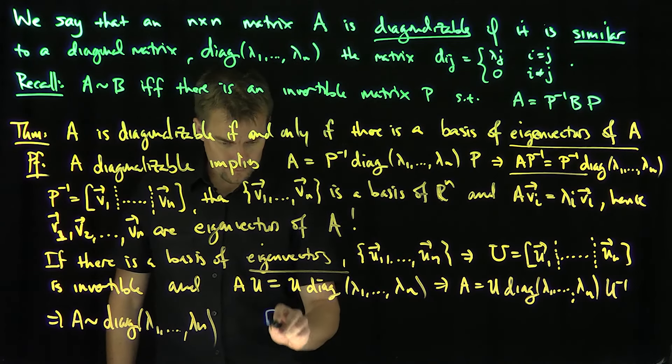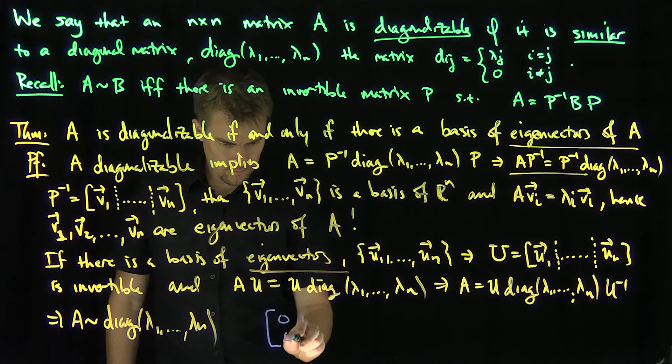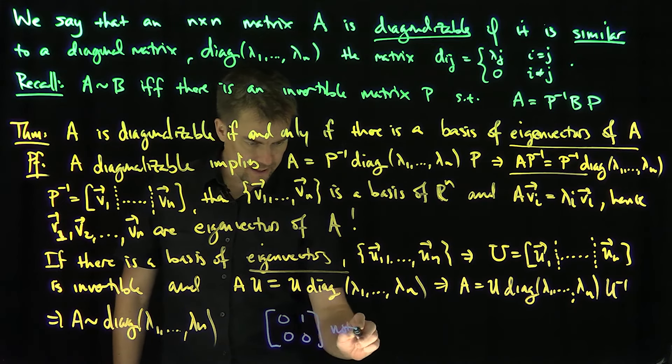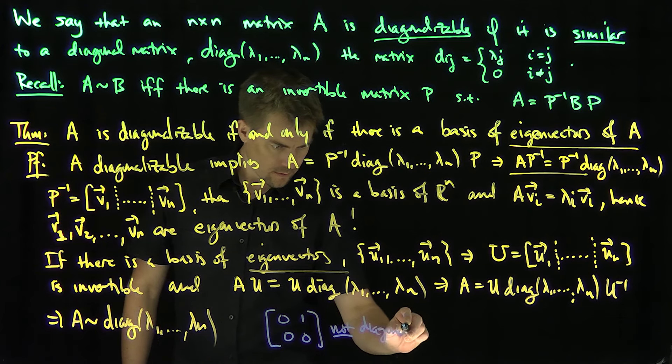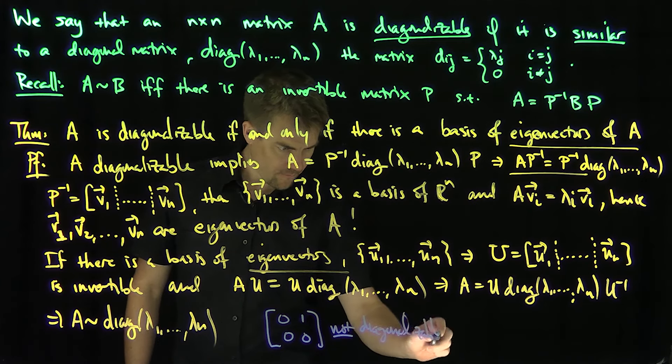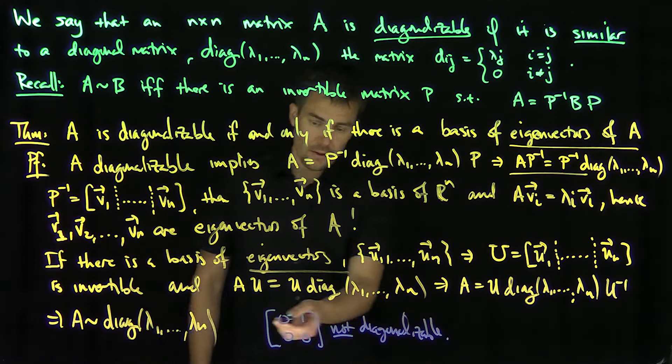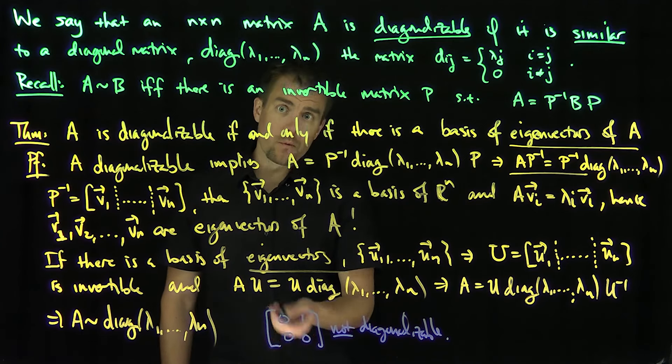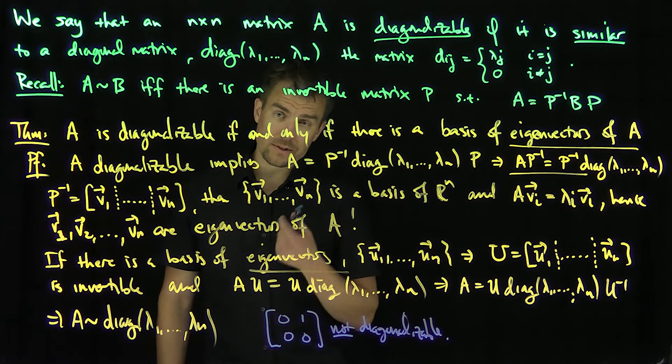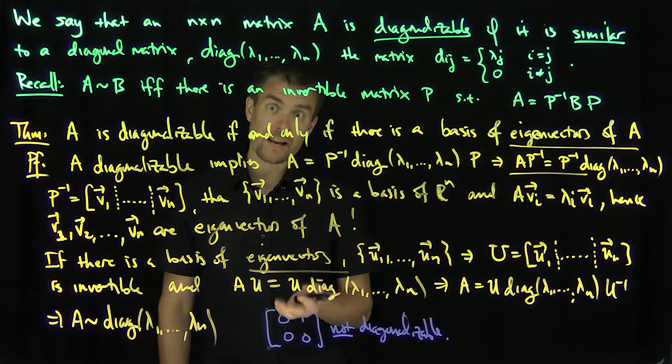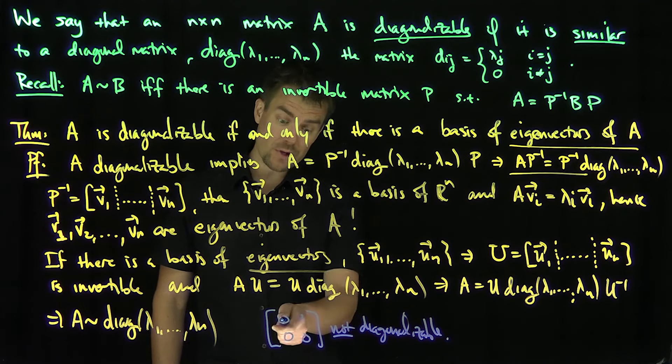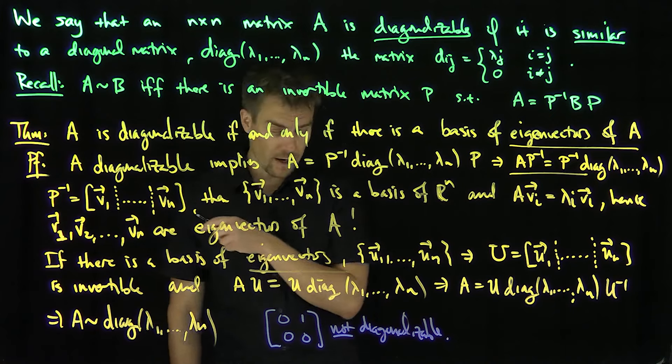For example, this matrix [0 1; 0 0] is not diagonalizable, as you can check. In fact, that's a good exercise to check. Because it's clear that the eigenvalues of this are zero, but the kernel of this matrix, zero is the only eigenvalue, but the kernel of this matrix is one-dimensional. So in other words, there's not a basis of eigenvectors that correspond to zero, which is the only eigenvalue of this matrix.